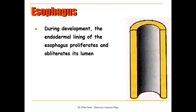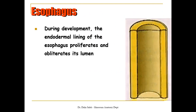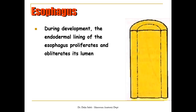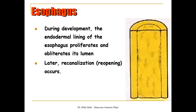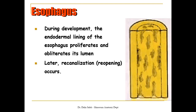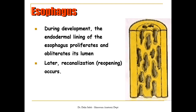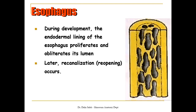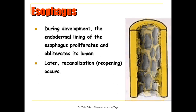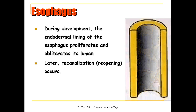During the development of the esophagus and the rest of the gut tube, the endodermal lining will proliferate and obliterate the lumen. But later on, small cavities appear and recanalization — or reopening — takes place once more, restoring its lumen.